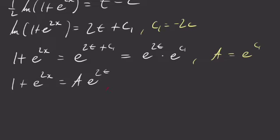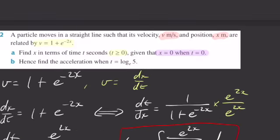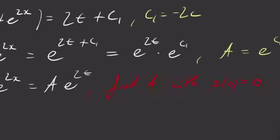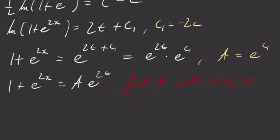So I'm going to find a with the fact that x of 0 is 0. So I'm going to go back to the question. That was our initial condition: t is 0, x is 0. So 1 plus e to the 2 times 0 equals a e to the 2 times 0. So this pretty clearly implies that a equals 2.